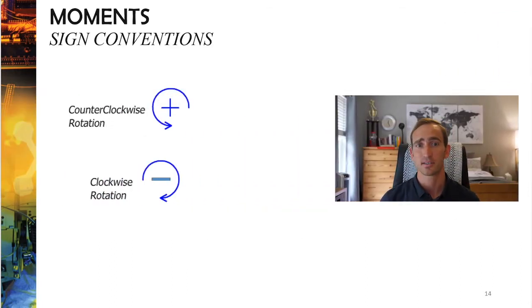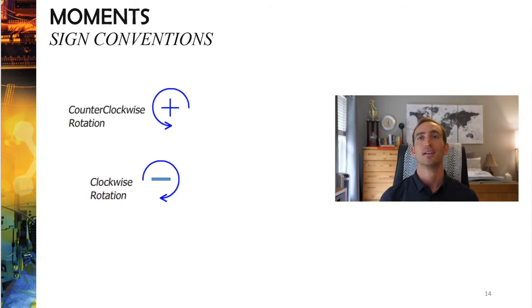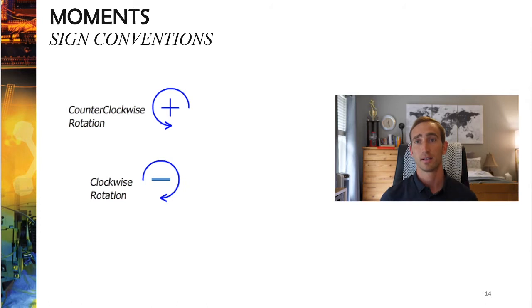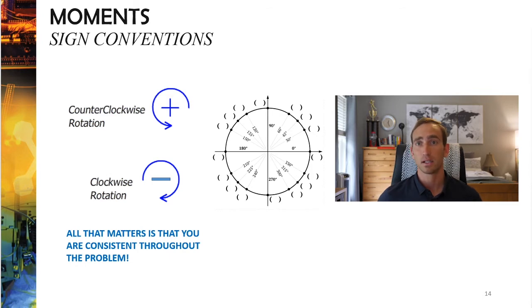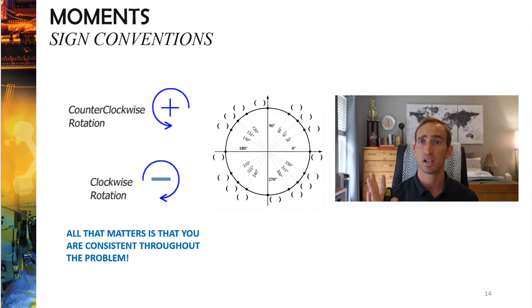Sign conventions — everyone needs to know this. Usually in x and y, up is positive, down is negative. In moments, we say counterclockwise is positive, whereas clockwise is considered negative. The reason is the unit circle — it increases in degrees and radians as you go counterclockwise. To be honest, this doesn't matter as long as you remain consistent throughout the problem and don't switch things up.